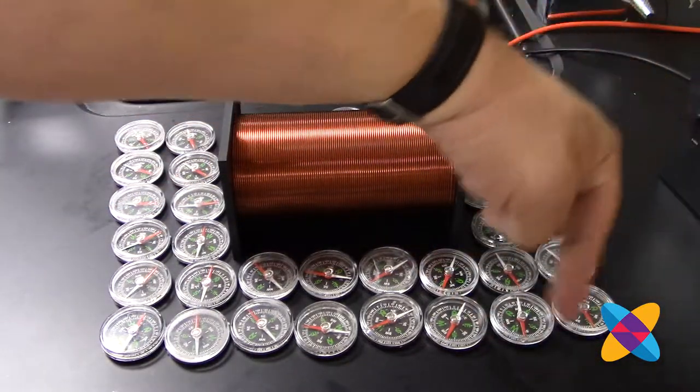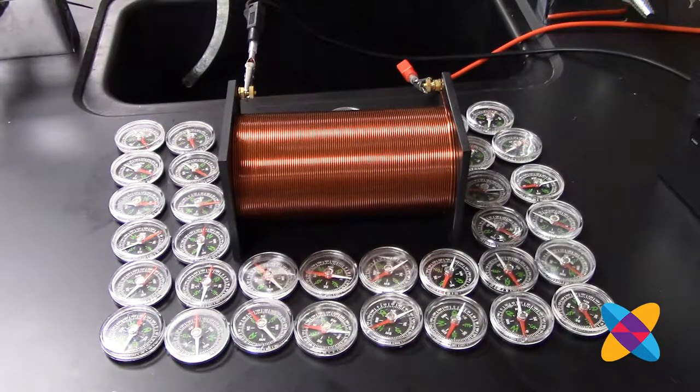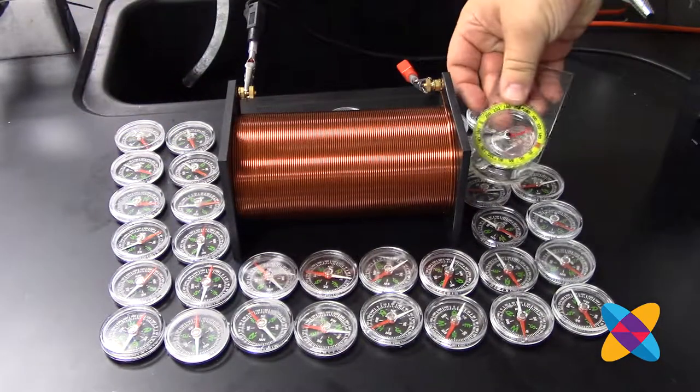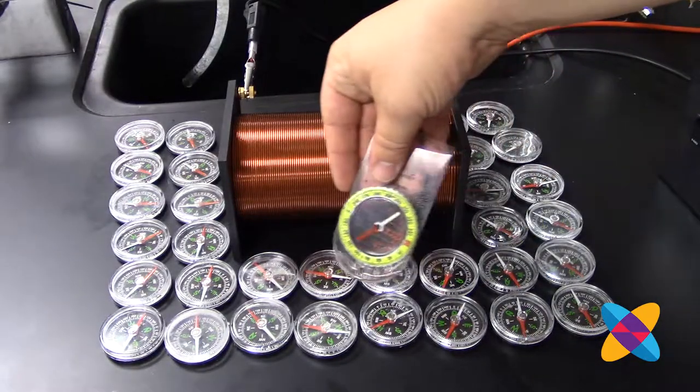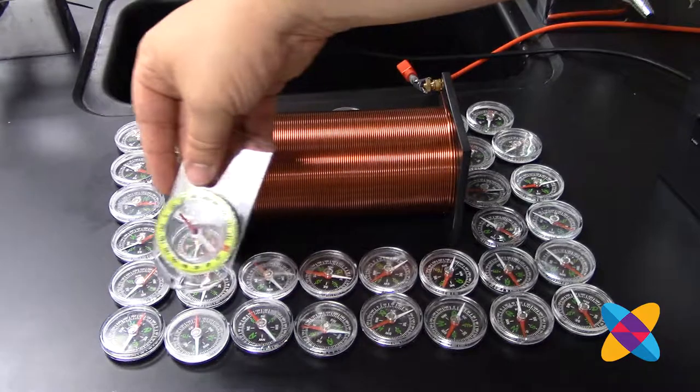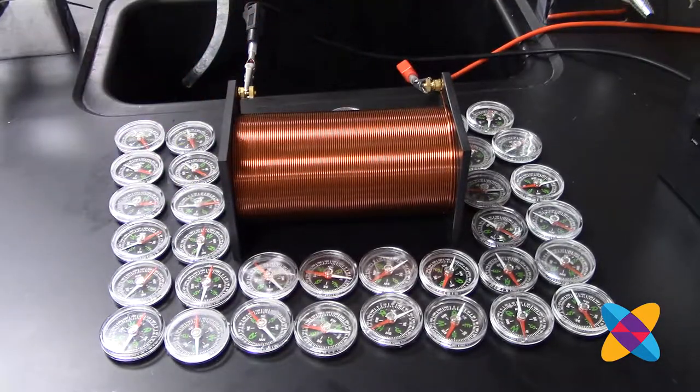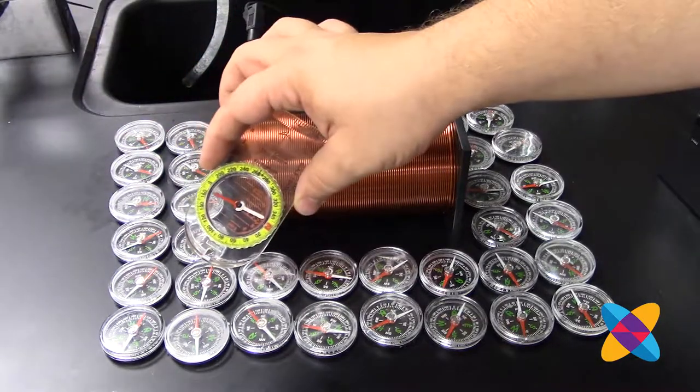And all the red ends are pointing away. I can even do that trick that I did before where I take the compass needle on one end - let's see if you can see that - and as I bring it around, it will go 360 degrees all the way around, just like for an actual compass.